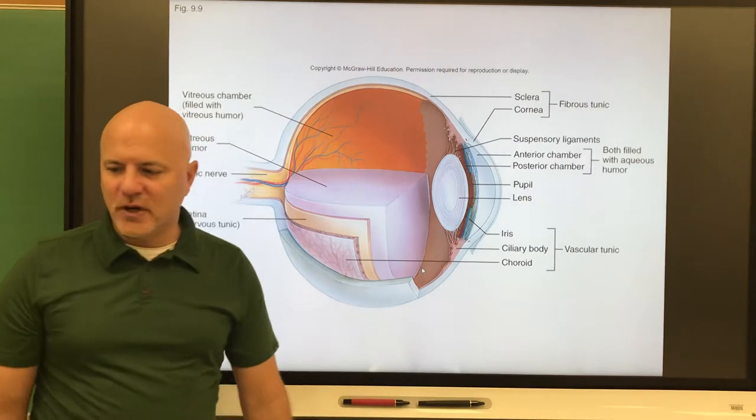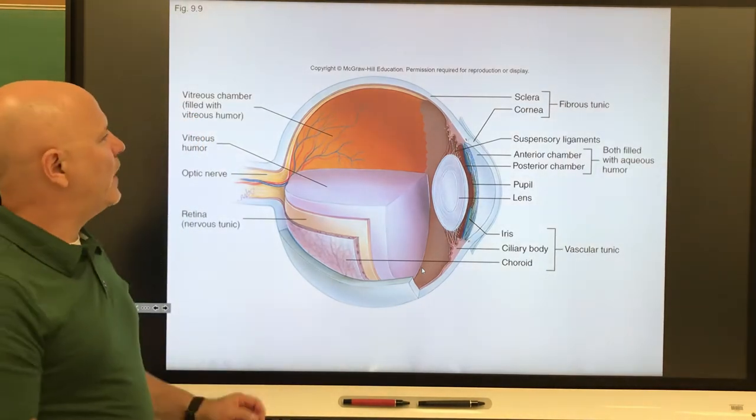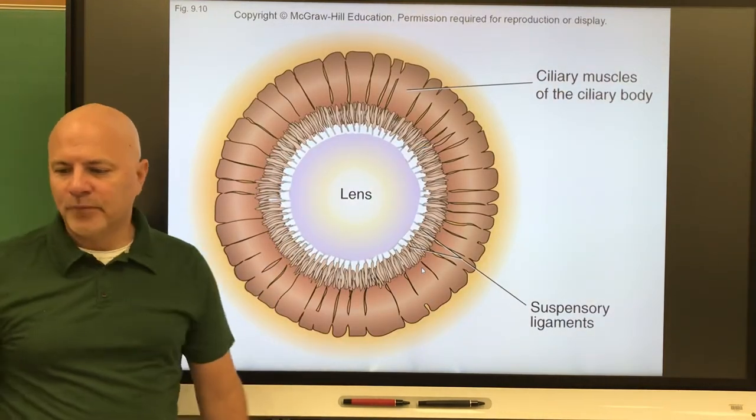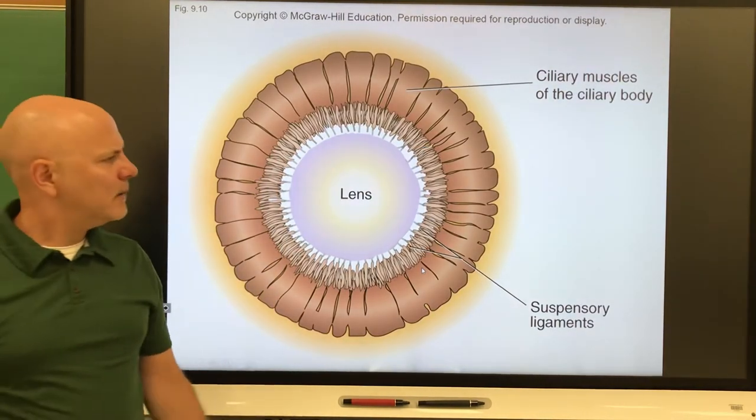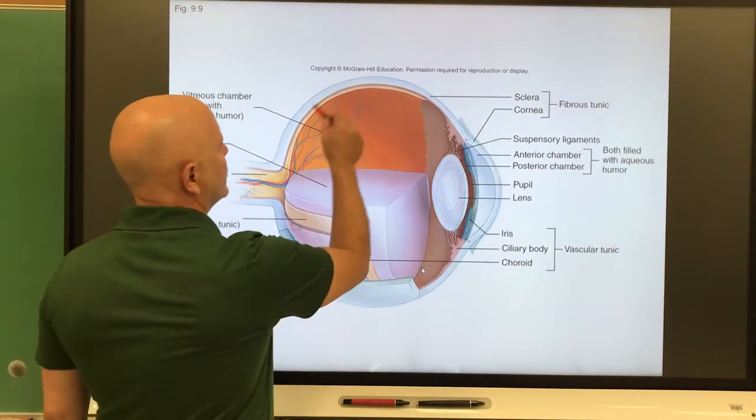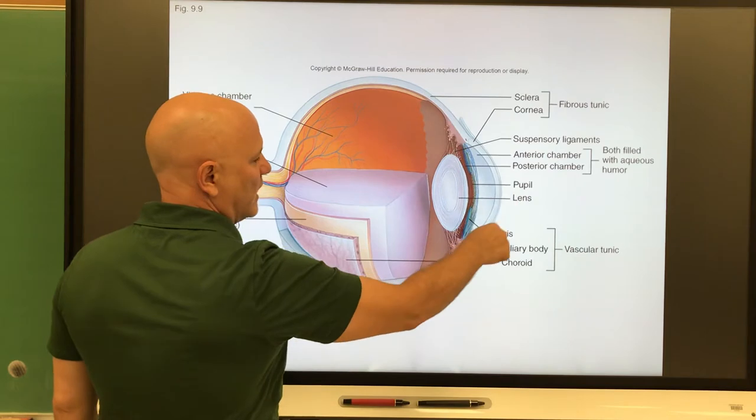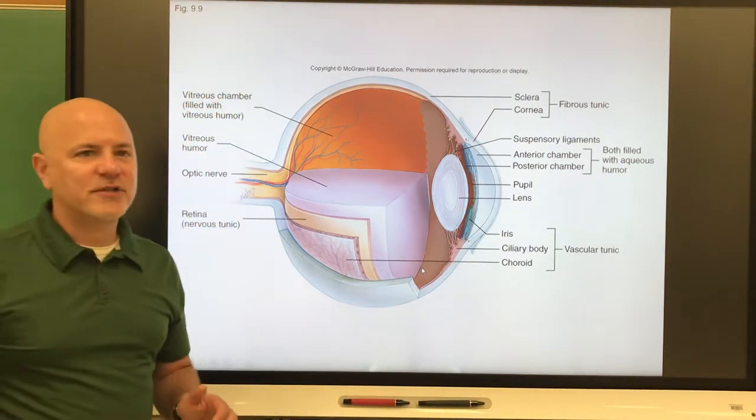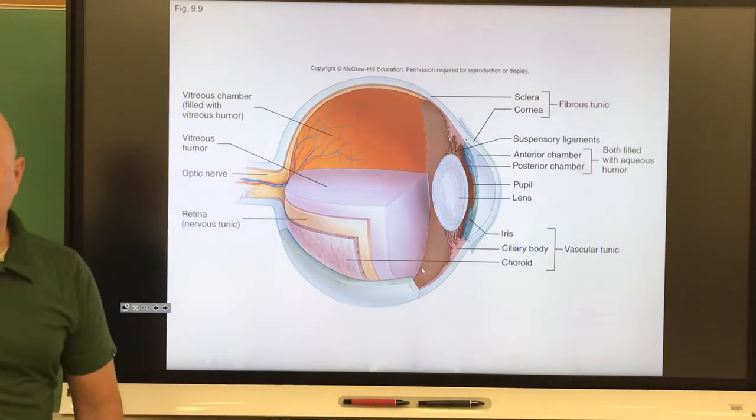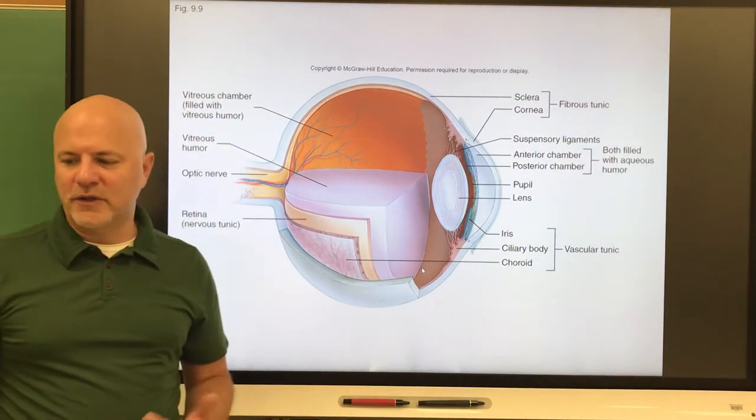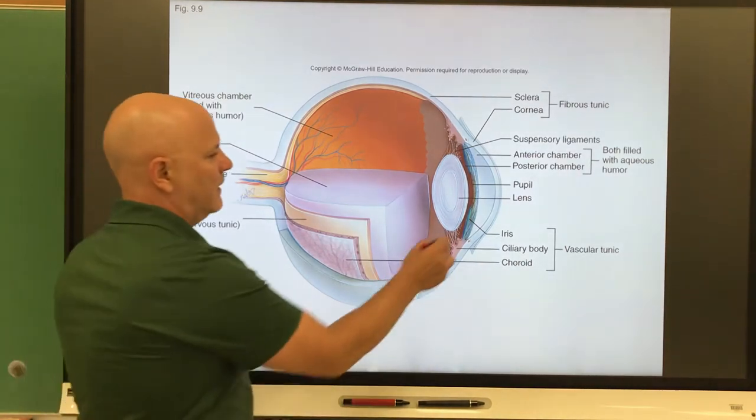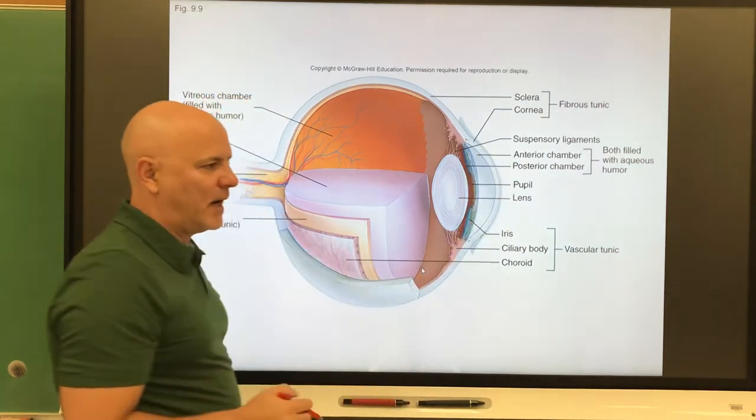Now let's look at the structure of the eye. There are three layers to the eye wall. The first layer is known as the fibrous tunic, shown here in white. The front part of that fibrous tunic is known as the cornea. The cornea is the anterior transparent bulge in the front of the eye, and it's going to help focus incoming light rays.